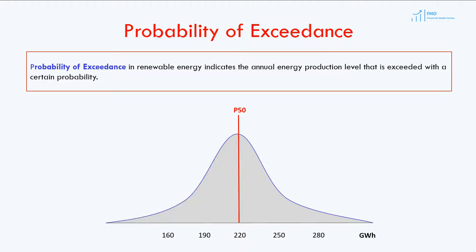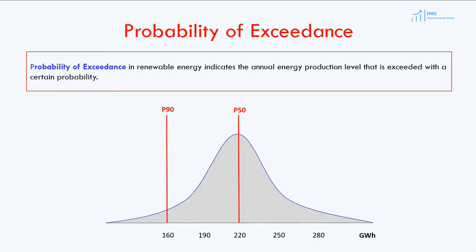A more conservative probability of exceedance would be P90, which corresponds to an annual energy production of 160 gigawatt hours. P90 means that there is a 90% chance that the annual energy production level of 160 gigawatt hours will be exceeded, and only a 10% chance that it will fall below 160 gigawatt hours. The higher the chance that a certain level of production will be exceeded, the lower the production number. The P-value can be thought of as how confident you can be that generation over the period will exceed a given value.